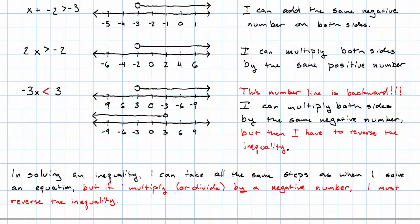Why? Because multiplying or dividing by a negative number flips the number line around.